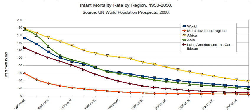Seven out of ten childhood deaths are due to infectious diseases: acute respiratory infection, diarrhea, measles, and malaria. Acute respiratory infections such as pneumonia, bronchitis, and bronchiolitis account for 30% of childhood deaths, with 95% of pneumonia cases occurring in the developing world. Diarrhea is the second largest cause of childhood mortality, while malaria causes 11% and measles is the fifth largest cause. Folic acid for mothers is one way to combat iron deficiency, and public health measures such as iodized salt or drinking water and vitamin A supplements can lower iron deficiency anemia.